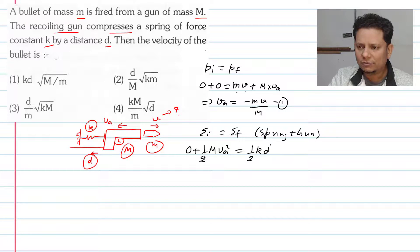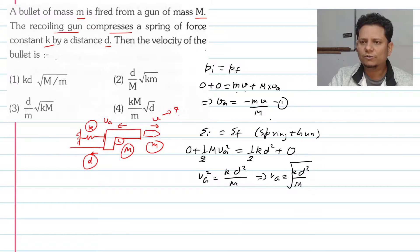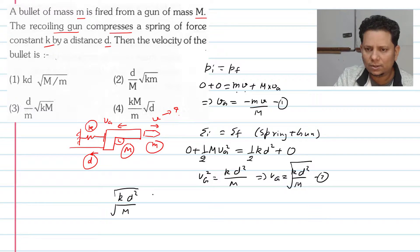The same frequency will be equal to 0. Which implies aapka VG velocity of gun that will be equal to K D square divided by M ka under root. Now first or second, this is your second equation. First or second ko aapka equate kar dehen in ka magnitude, so this will be equal to K D square divided by M ka under root will be equal to M V divided by capital M.